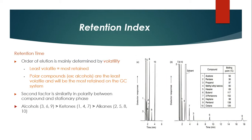The order of elution is mainly determined by volatility — least volatile equals most retained. Polar compounds such as alcohols are the least volatile and will be the most retained on the GC system. A second factor is similarity in polarity between the compound and the stationary phase, affecting the elution order of alcohols, ketones, and alkanes.